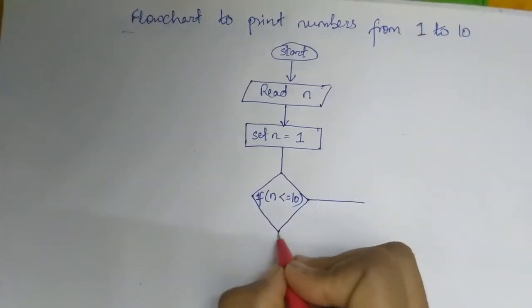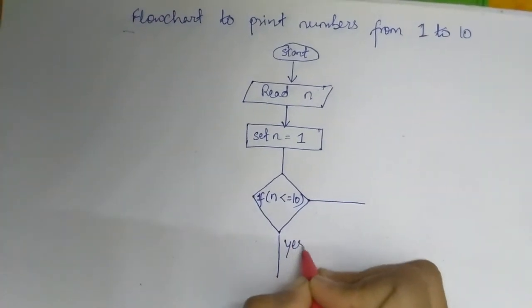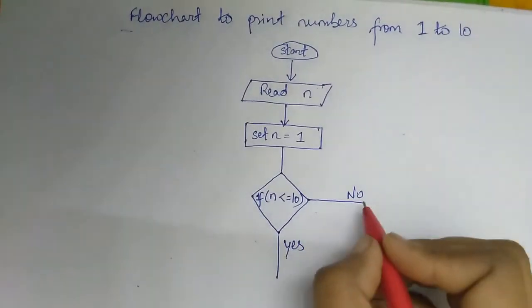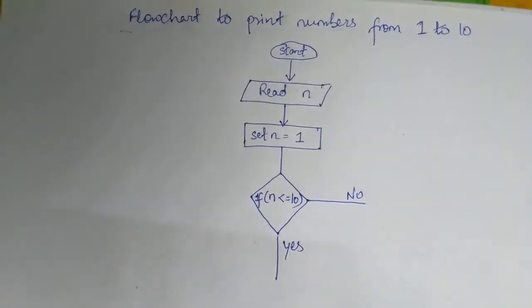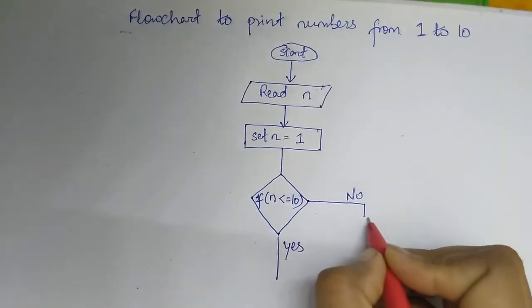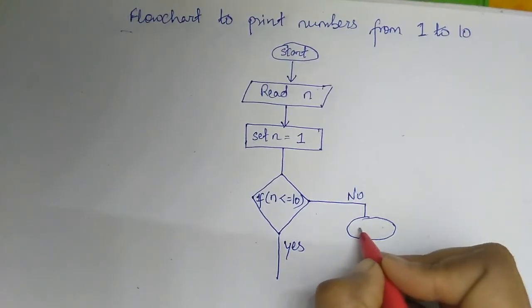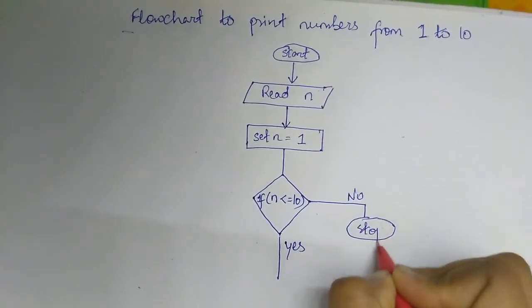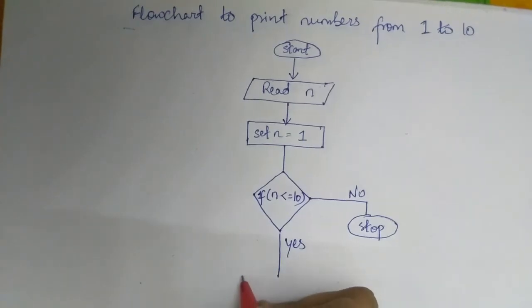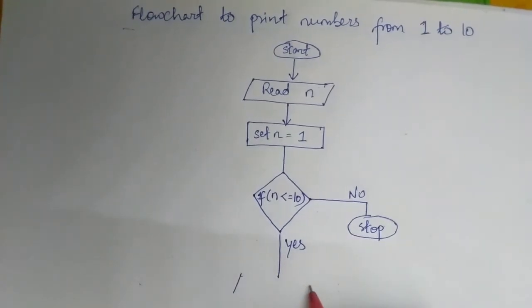There will be two scenarios, whether true or false, whether yes or no. In the no case, the loop will stop or end. And in the yes case it will print the value of n.